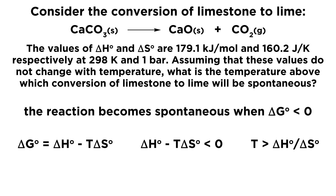Because we're trying to figure out the temperature above which conversion of limestone to lime will be spontaneous, that means we're going to be solving for a temperature. So let's rearrange this inequality to solve for temperature. All we do is add T delta S to both sides and then divide by delta S, and we get T is greater than delta H over delta S.